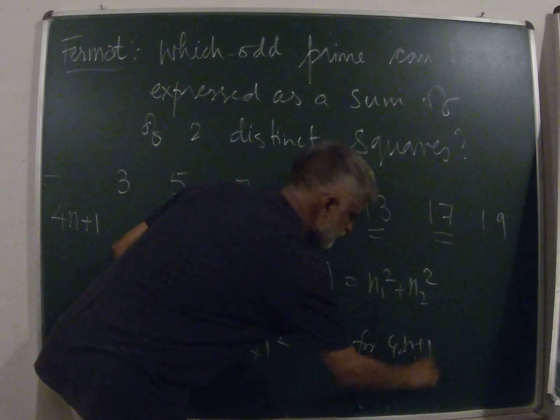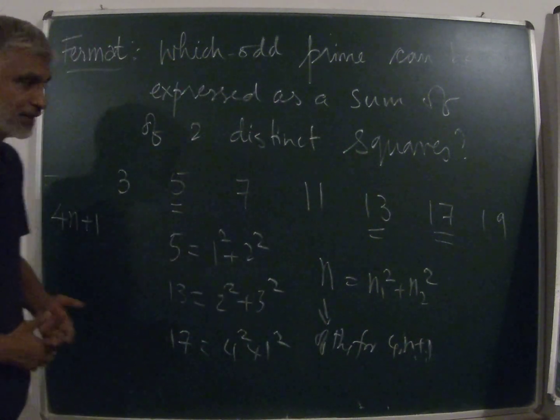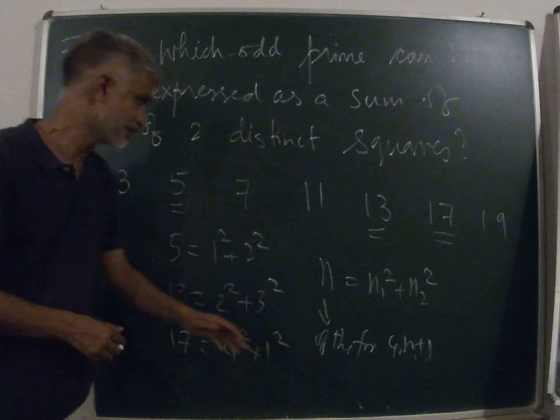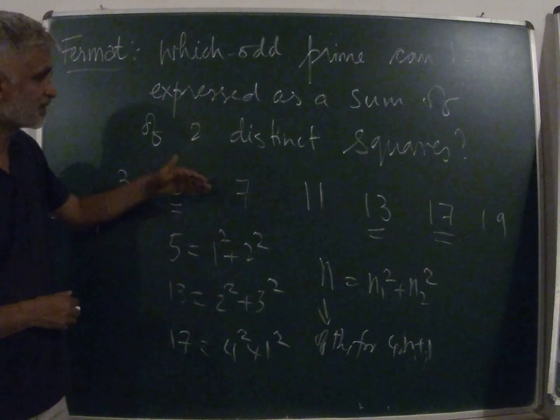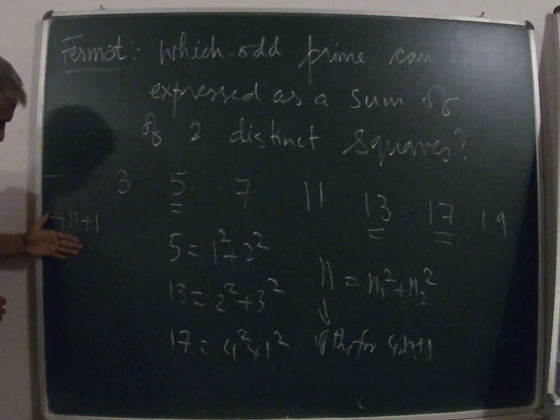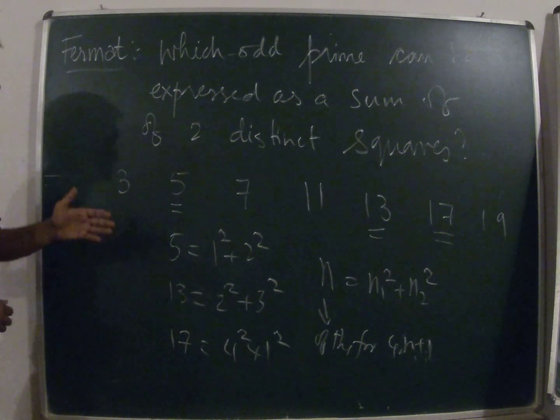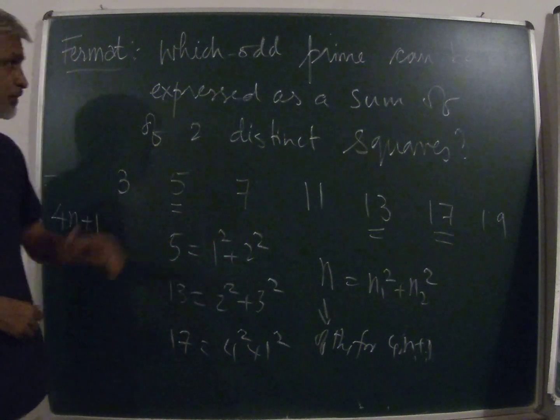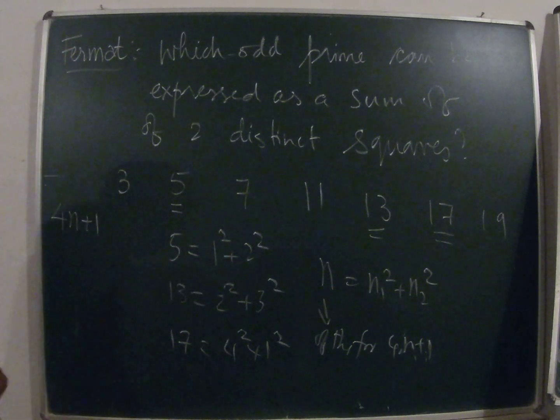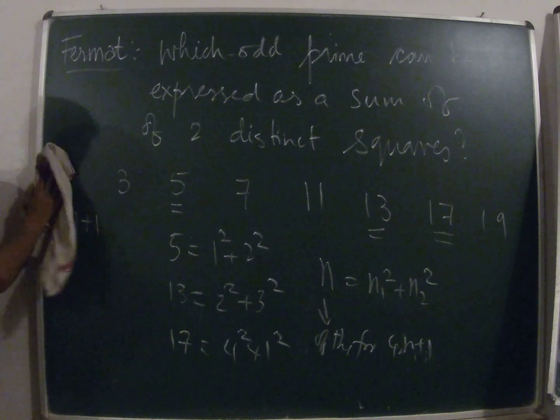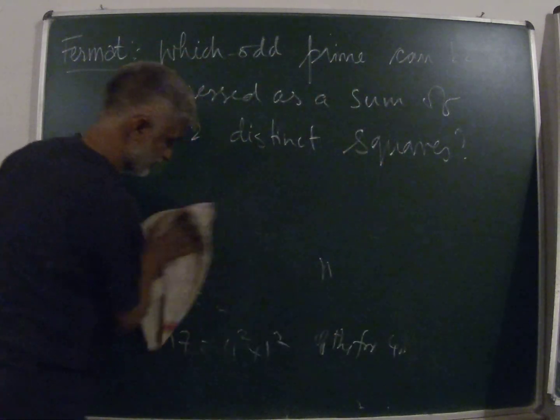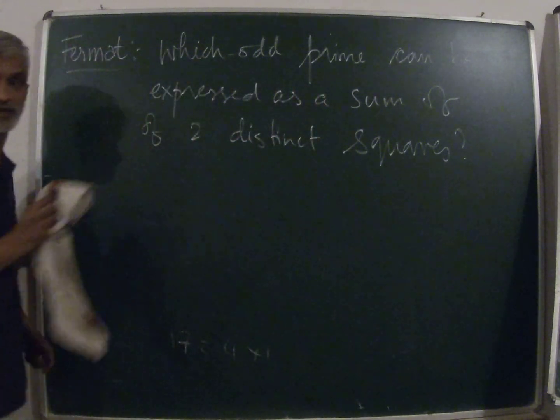This one is very easy to prove for you based on what you learned last time. But the real powerful statement is the other way around: if you have an odd prime of the form 4n plus 1, then you can definitely break it up into sum of two distinct squares. Fermat had an idea for the proof, and that proof was completed by Euler, and therefore this is known as the Fermat-Euler theorem.